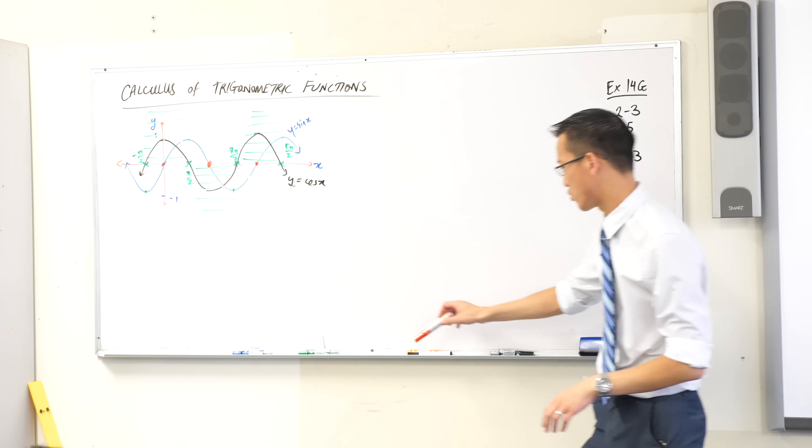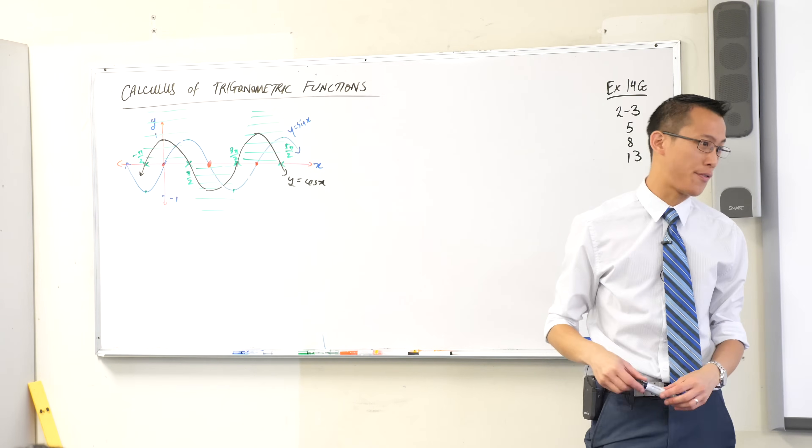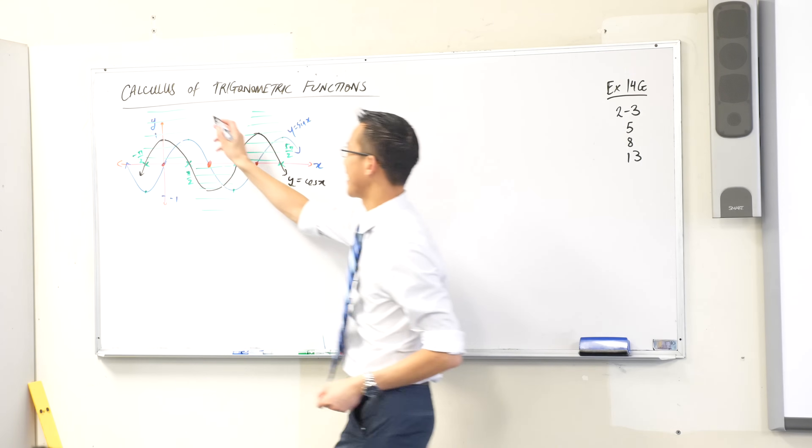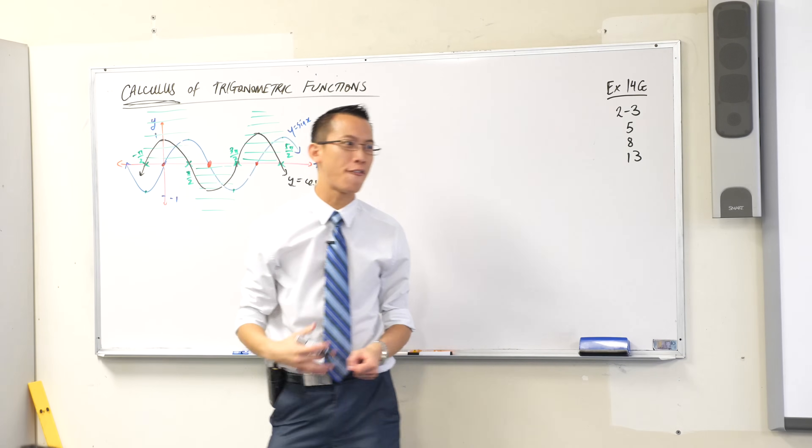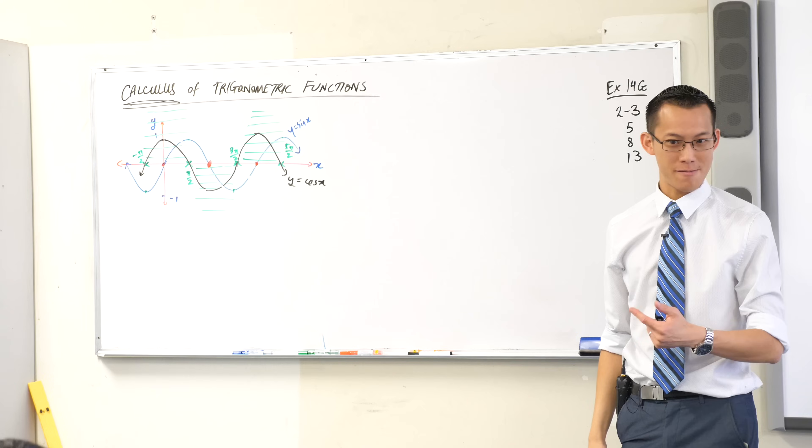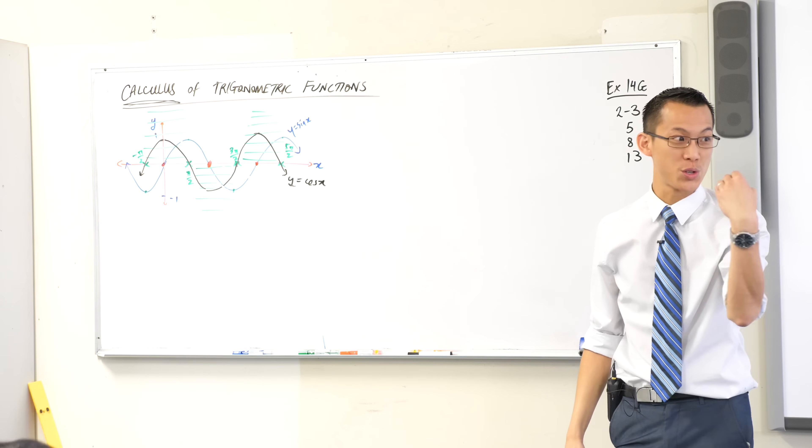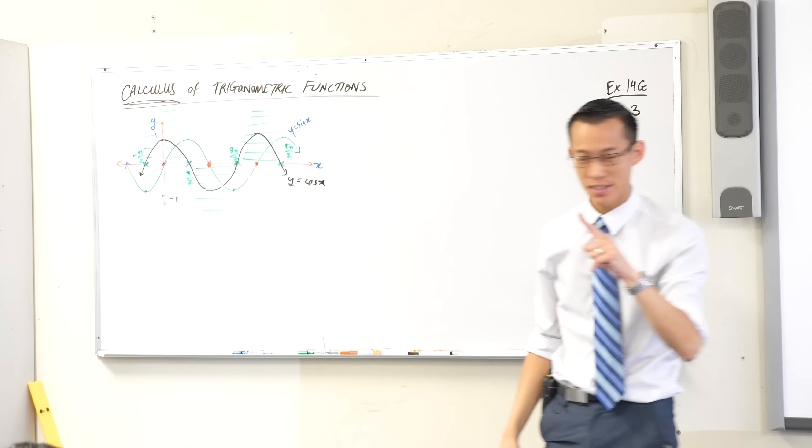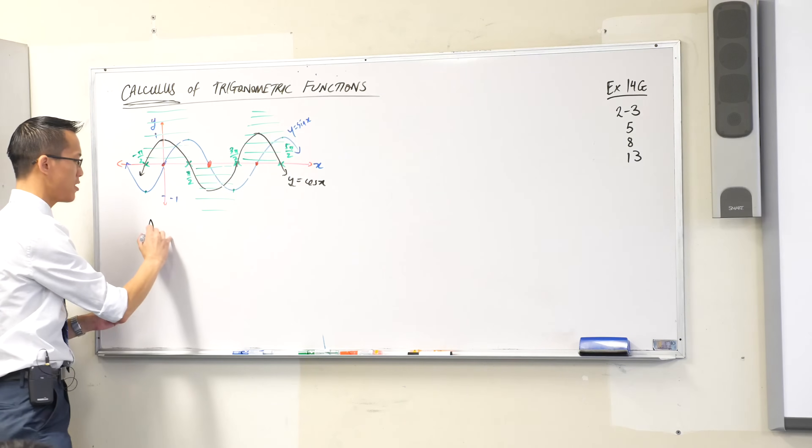So how can we tell whether something is true? What was the very first thing we looked at under the heading of calculus? The very first thing we looked at was to differentiate we need to go to first principles, right?